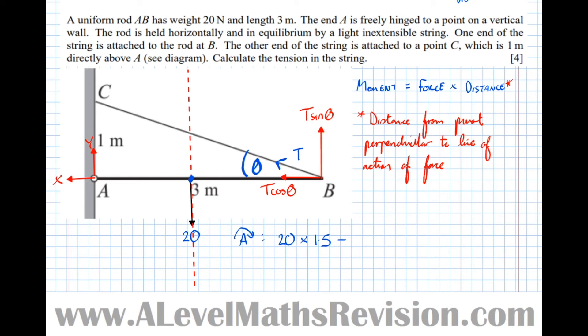And the reason I've done this is because now I'm considering this to be the line of action of the force, vertical. So the perpendicular distance is more obvious. It's 3 metres. So that becomes take away T sine theta times 3 metres equals 0. So it's an equilibrium.